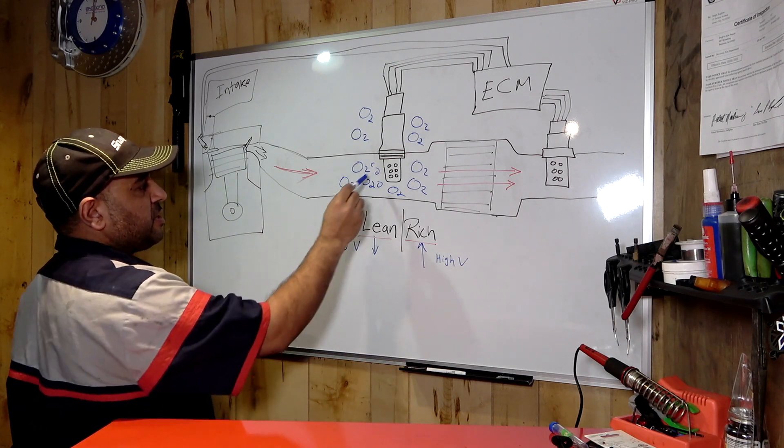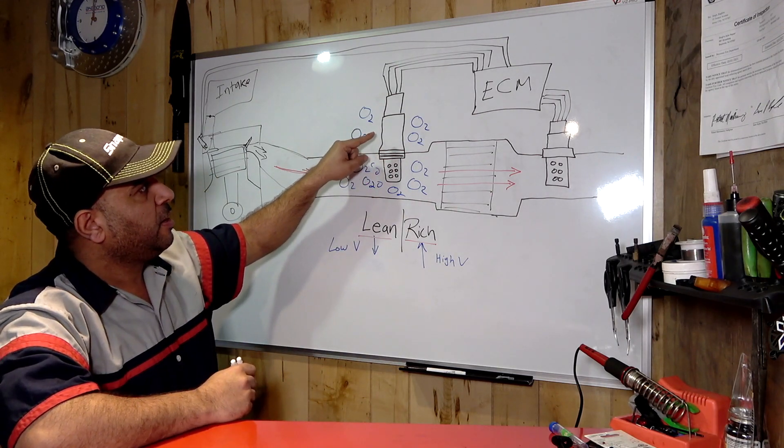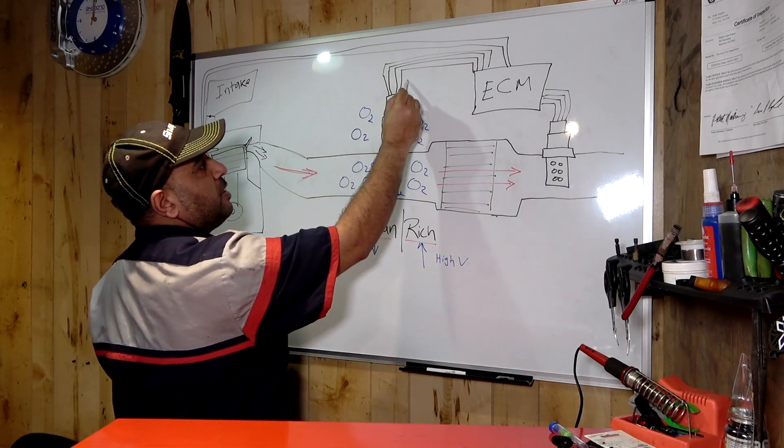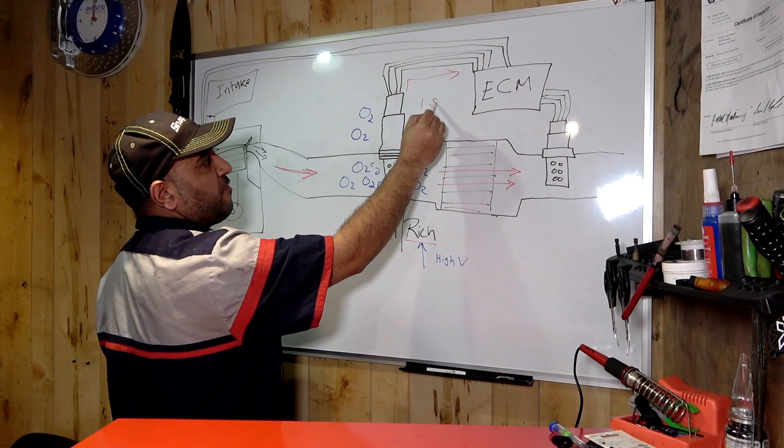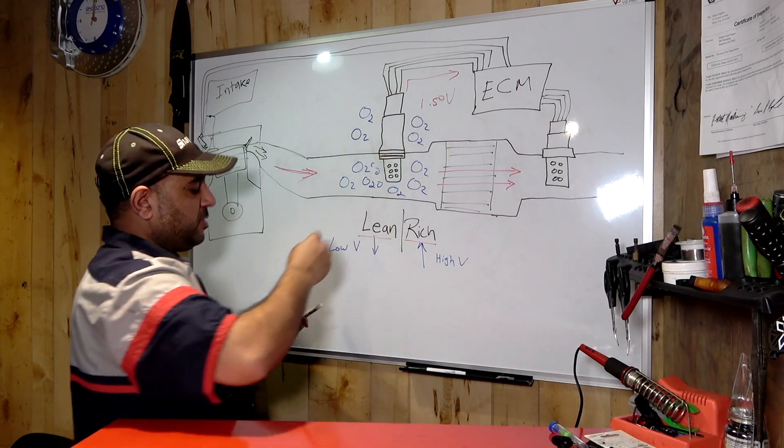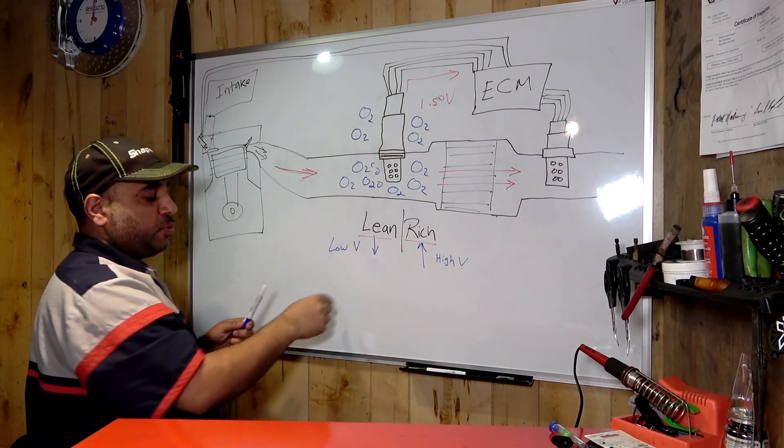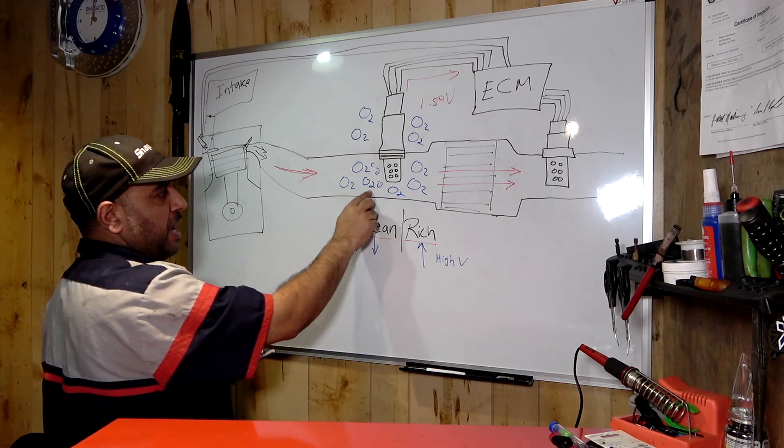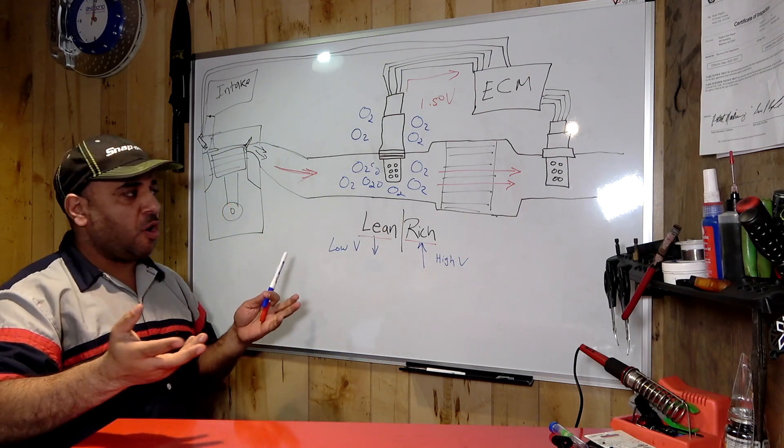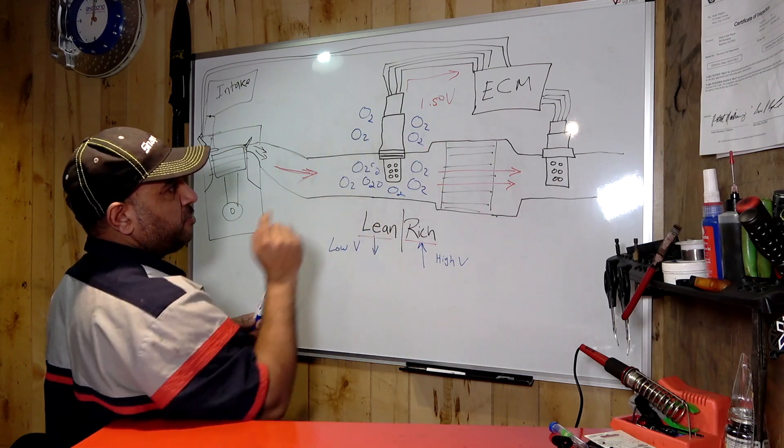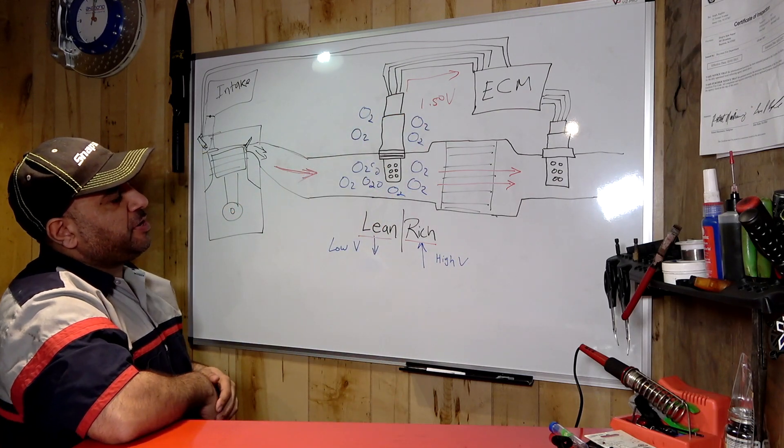Having too much oxygen, it's gonna determine and it creates a voltage signal that goes to the computer. Let's say 1 volt or 0.5 volt. The voltage will drop if you have too much oxygen, and it's gonna pop up a lean code. It's gonna send a signal to that computer.